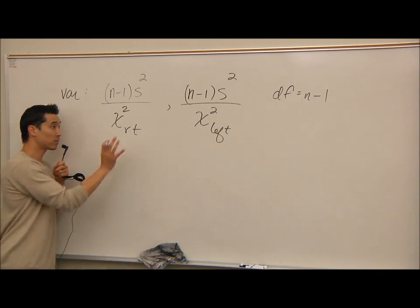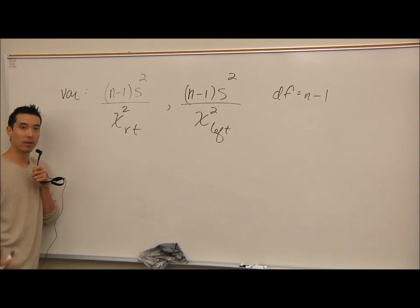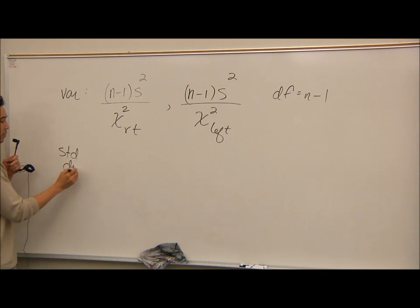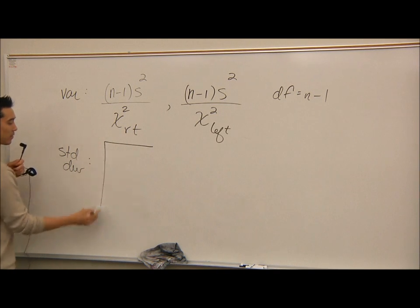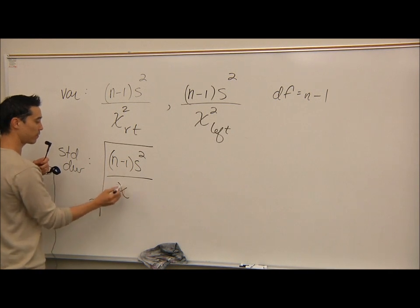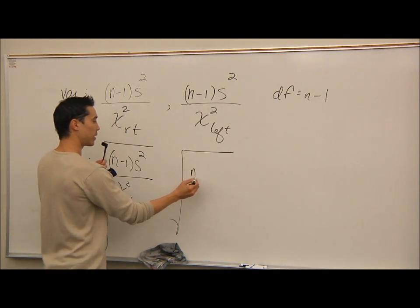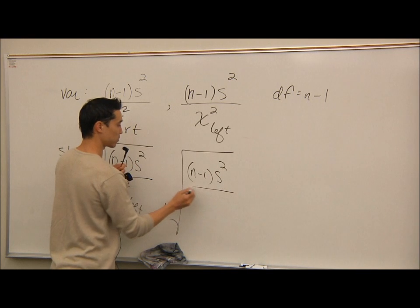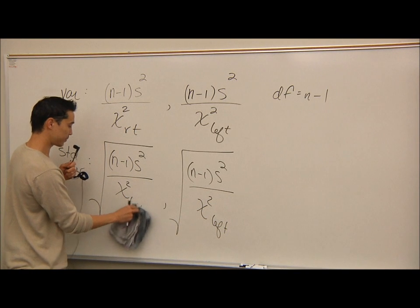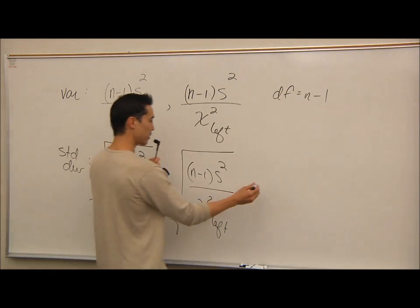If that is the confidence interval for variance, what do you think the confidence interval for standard deviation is going to be? Square root of it — exactly. So for the standard deviation it's the same formula but you take the square root of each bound: √[(n−1)·s² / χ²_right] and √[(n−1)·s² / χ²_left]. The degrees of freedom is still n minus 1.